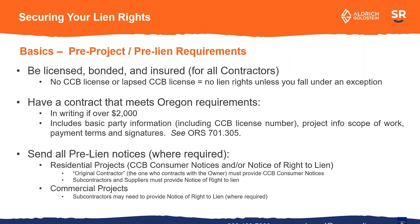To be able to file and enforce a lien, you need to be licensed, bonded, and insured with the Oregon CCB. If you don't have a license or if it lapses, you can lose your lien rights, so it's important to keep those things in place throughout the duration of the project. You also need to have a contract that meets Oregon's requirements — those are available on the Oregon CCB website. The contract, if it's for work more than $2,000, needs to be in writing. It needs to include basic party information and your CCB license number actually on the contract itself or any attachments. You want to keep your basic project info on the scope of work, the payment terms, and the signatures showing that both parties agree to the contract.